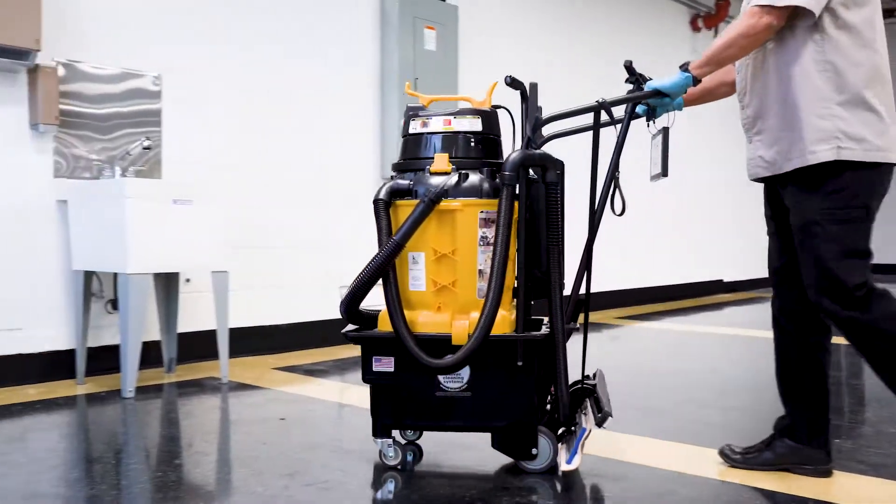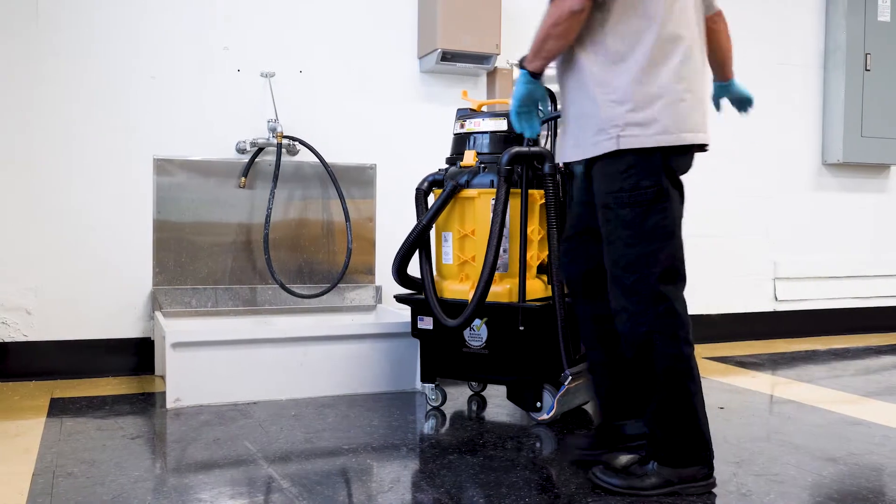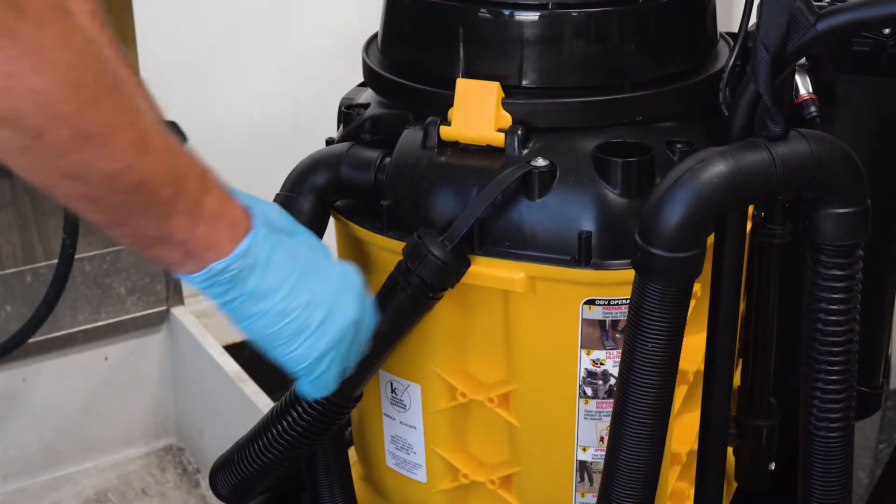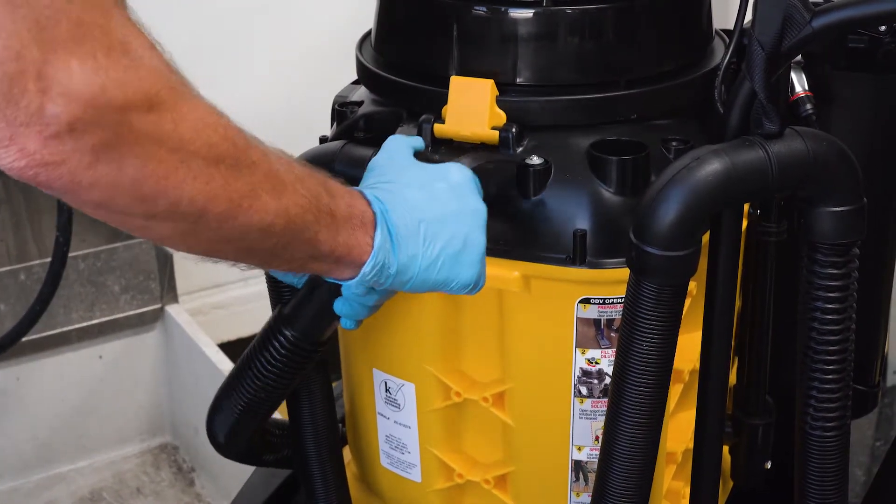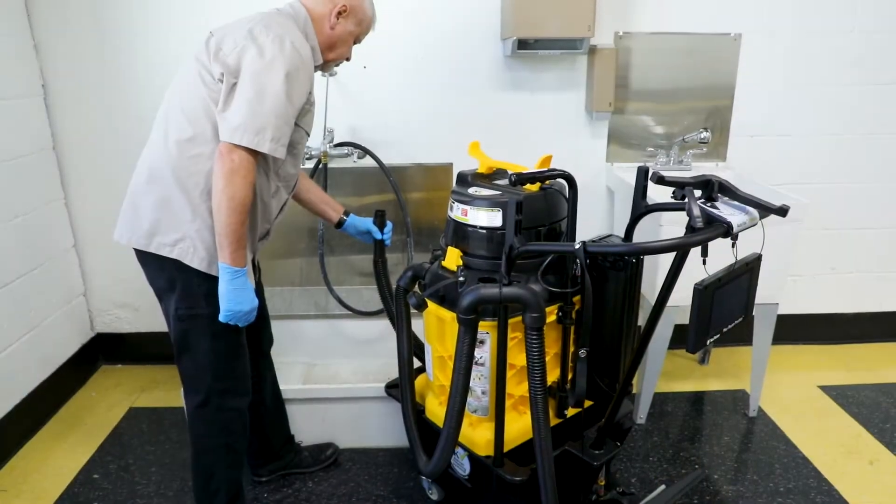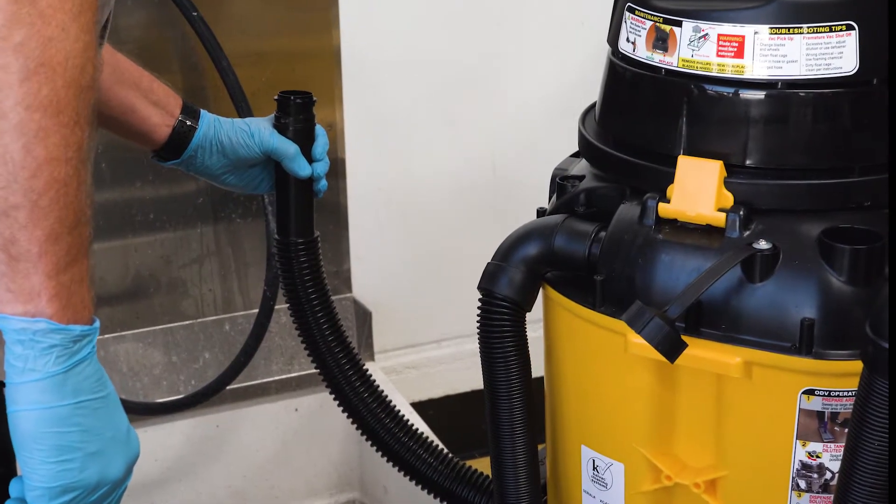To begin, wheel the system to a floor sink and locate the dump hose on the side of the vacuum tank. Now disconnect the dump hose from the vacuum tank and keep the hose pointed in an upright direction to avoid spills.